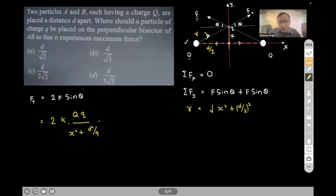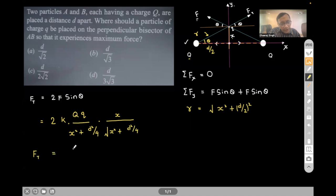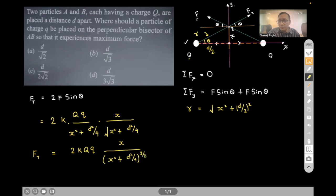From the diagram, sin θ = x / √(x² + d²/4). Substituting into the total force expression, F_total = 2kQq · x / (x² + d²/4)^(3/2). This is the expression for the net force as a function of x, and we need to maximize it.